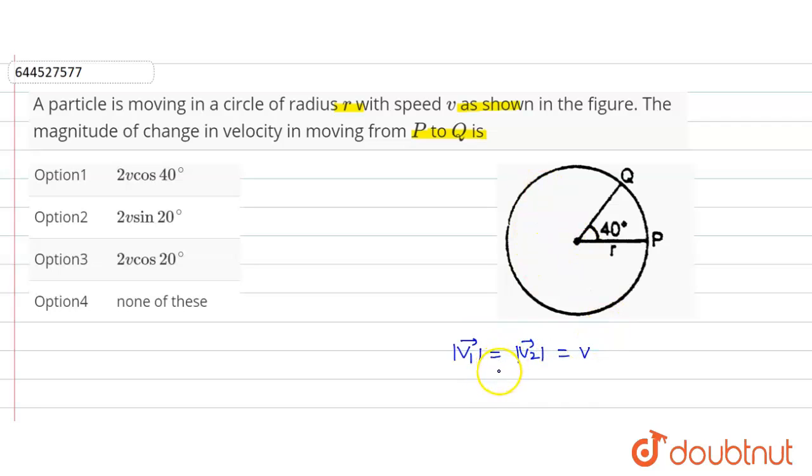So del v, change in velocity, del v squared is equal to v squared plus v squared minus 2v squared cos 40 degrees.